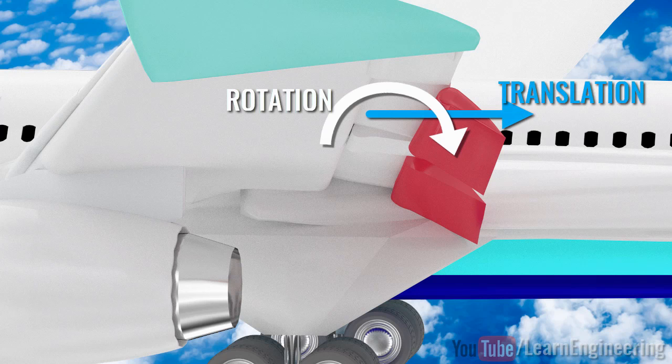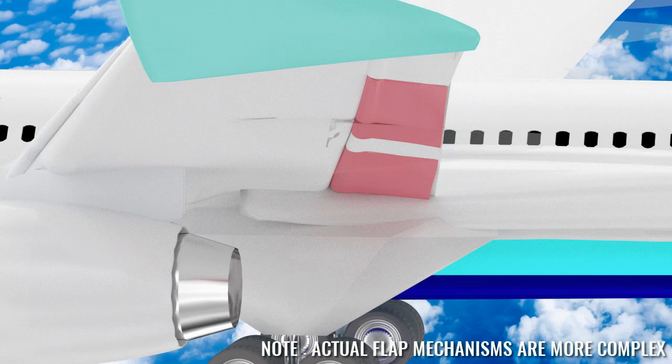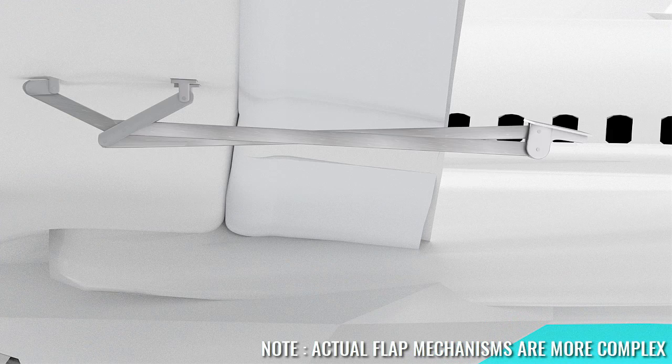Let's understand one of the simplest flap mechanisms that facilitates this motion. The specialty of this mechanism is that by moving just one link, we achieve the desired motion.